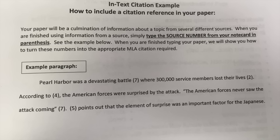And it says where 300,000 service members lost their lives, and it has a 2 in parentheses after that. Most of the time that number is going to be at the end of your sentence — wherever that piece of information came from, whichever source, you're going to put a source number there. This is going to be an important part of outlining, so make sure you understand what this means before you move on to starting your outline.